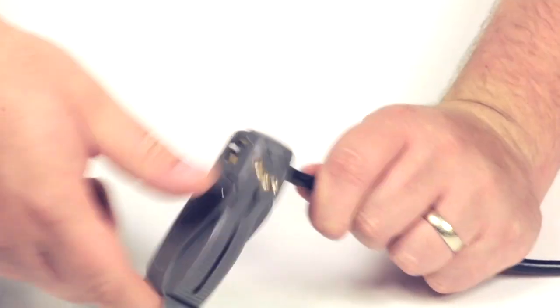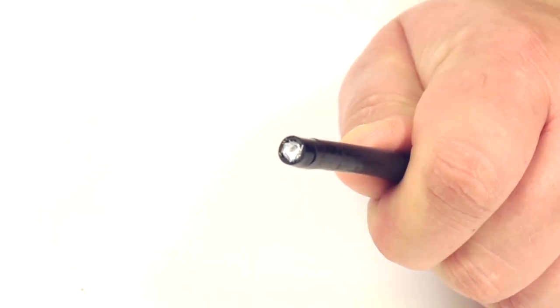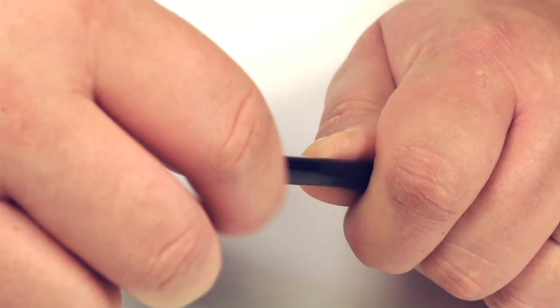Start by stripping back the jacket using the strip tool. The jacket should be stripped about half an inch and dielectric down to about a quarter of an inch.